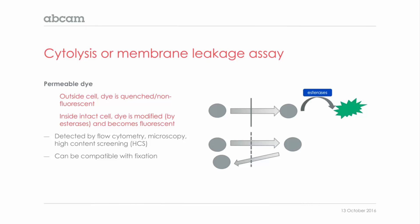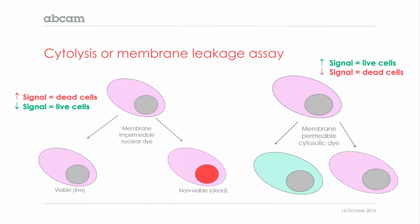If we use a permeable dye for this assay, the working principle is almost the opposite. The dye can diffuse freely through the intact plasma membrane into the cytosol, where it is generally modified by esterases to become fluorescent. Because the fluorescent molecules cannot diffuse back through the membrane, this type of assay is actually compatible with fixation. So with a permeable dye, we get a higher signal in live cells, while an impermeable dye gives a high signal in dead cells.